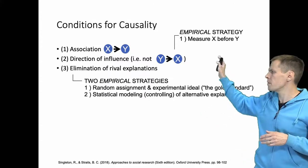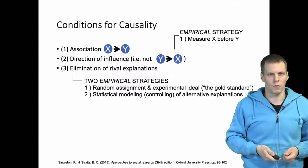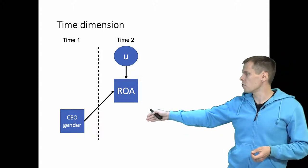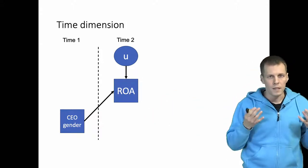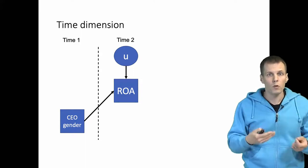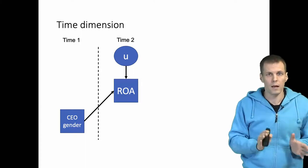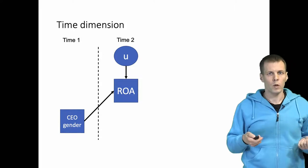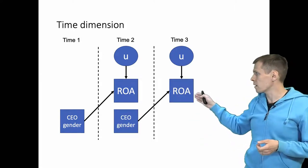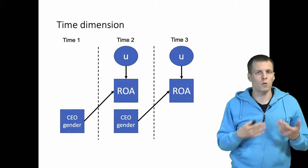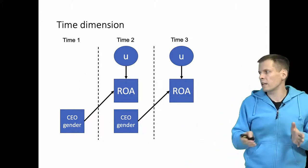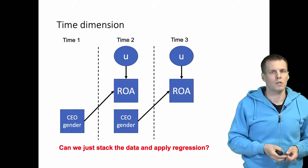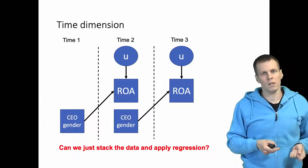Let's take a look at why we would want to measure X before Y. We have CEO gender at time 1 and ROA at time 2. If this is all the data we had, the only thing we could do is simply run a regression analysis. But quite often we actually do have more data — we could have ROA at time 3 and CEO gender at time 2. So what do we do with this data? Do we just stack all the data together and run a regression analysis? That could be done, but there are some challenges to it.